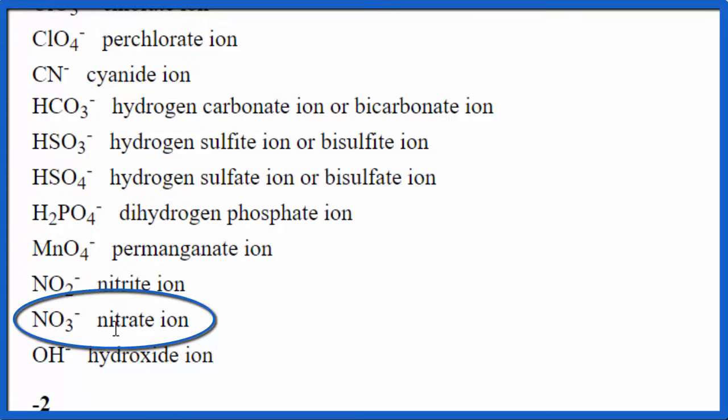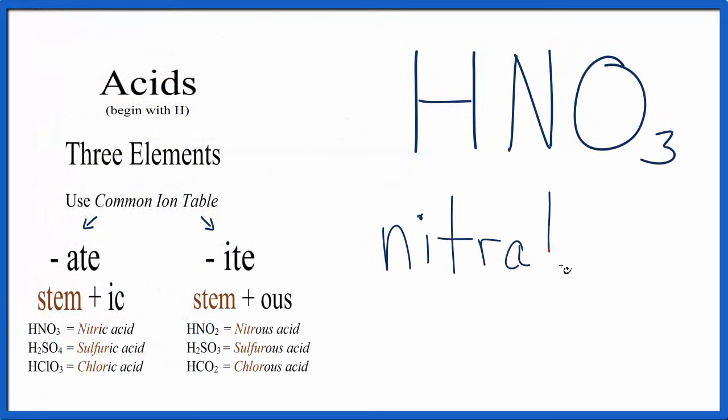So we'll remember nitrate and go back to our flowchart. We write nitrate, and then we look at our flowchart. We see that if it ends with -ate, we're going to use this rule right here. So we have the stem and then IC. So we get rid of the -ate. That leaves us with our stem, N-I-T-R, and now we write IC. Next we write acid, and we're done. Nitric acid is the name for HNO3.